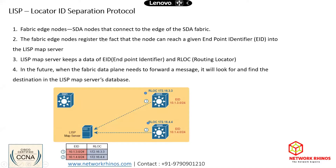The fabric edge nodes register the fact that the node can reach a given endpoint identifier into the LISP map server. The LISP map server keeps data of EID — endpoint identifier — and RLOC, routing locator.